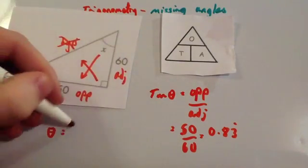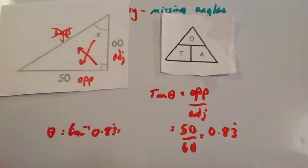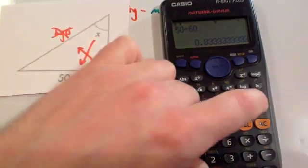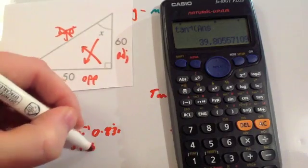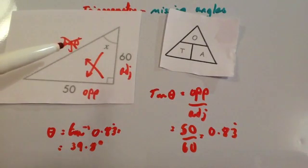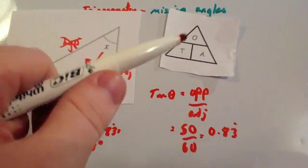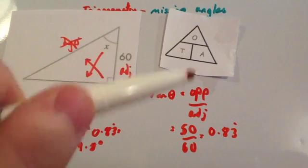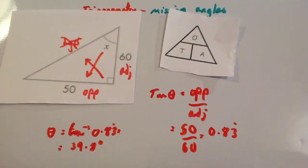θ equals tan to the minus 1 of 0.83 recurring. When you do it in your calculator, keep the answer in — just press shift tan and then press the answer button. When you do that, you get 39.8 degrees. So just to run through the steps again: label the sides, cross off the one you haven't been given, draw the triangle, cover up the tan or sine or cos, write down tan θ equals opposite divided by adjacent, put in the numbers and divide, then use the inverse tan — shift tan — to find the angle.